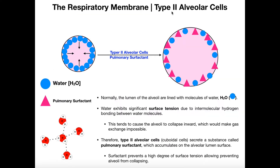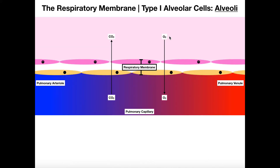Here, we're going to look at what are called type 2 alveolar cells. I'm not showing any of the cells here, but just understand these are cuboidal cells, so they're going to be very different in function than the type 1 alveolar cells.